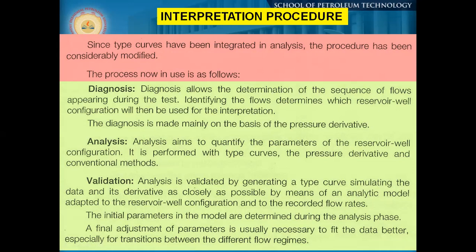With a specific type curve matched to get certain parameters, for validation you use the same parameters and flow rates to check whether the same result comes out. Sometimes you may have to adjust the parameters as well. Final adjustment of parameters is usually necessary to better fit the data, especially for transitions between different flow regimes. We have discussed different flow regimes, and that part will come up again when we discuss the diagnostic plot.